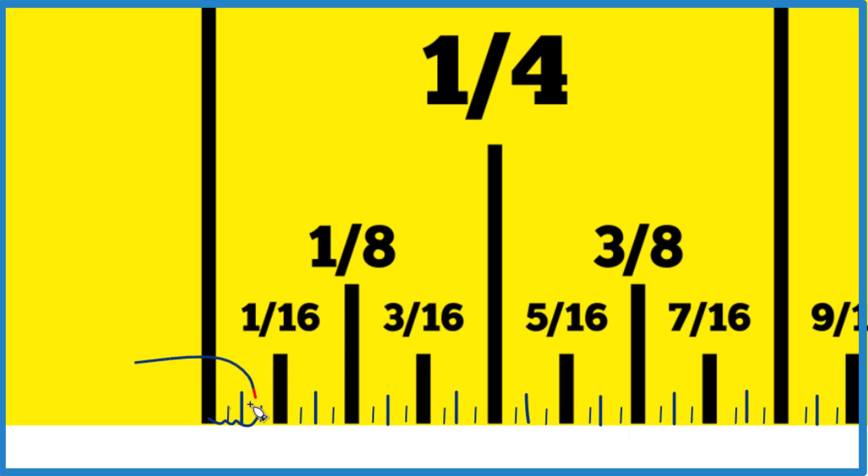So right here, that is three sixty-fourths on our ruler or tape measure. You could go four sixty-fourths, which is one sixteenth, five, six, seven, eight, nine, all the way up.